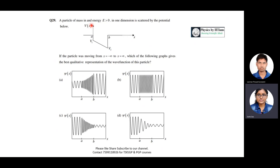The second question: a particle of mass m with energy E > 0 in one dimension is scattered by a potential V(x). The potential is V₁ at point a, V₂ at point b, with a linear gradient from V₁ to V₂ in between. The question asks: if the particle moves from x = −∞ to x = +∞, which of the following graphs gives the best qualitative representation of the wave function? Options are four different graphs.